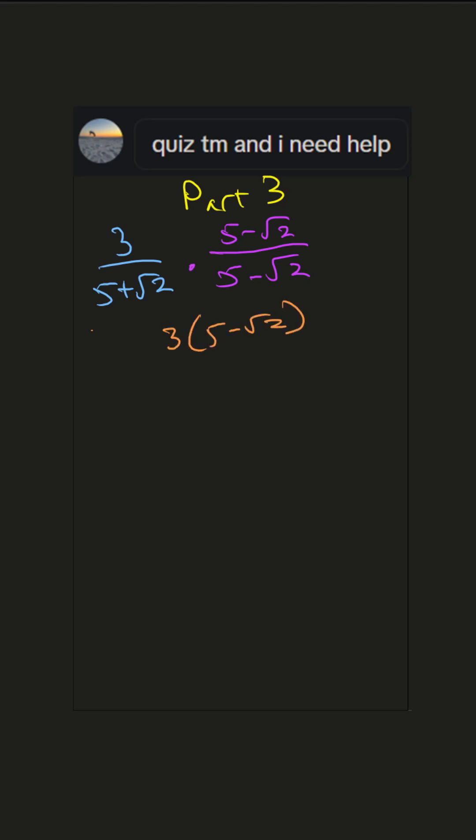Multiply the numerator, so that's 3 times 5 minus root 2. The denominator we have to FOIL: first, outer, inner, last. So first terms, 5 times 5 is 25. Outer, 5 times negative root 2 is negative 5 root 2.